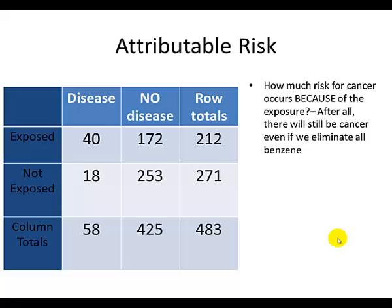We calculated the relative risk based on benzene exposure and the development of cancer, and we came up with a relative risk of 2.82, which told us that those who were exposed to benzene were 2.8 times more likely to develop cancer than those who didn't have benzene exposure. However, we didn't talk about how much cancer occurred just because benzene exposure occurred.